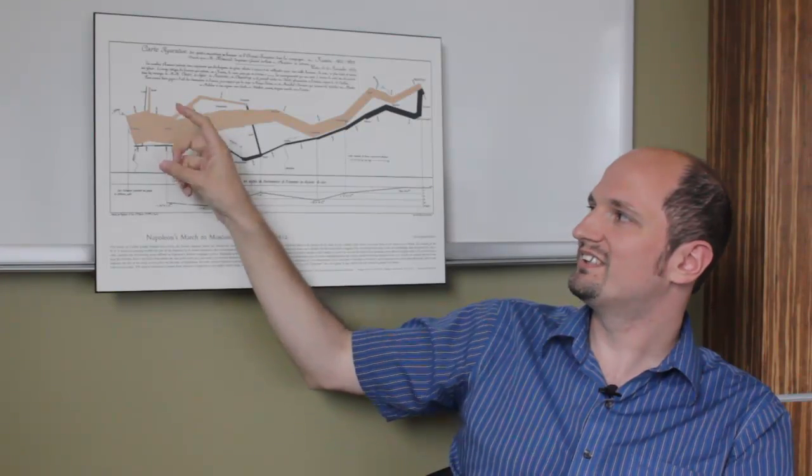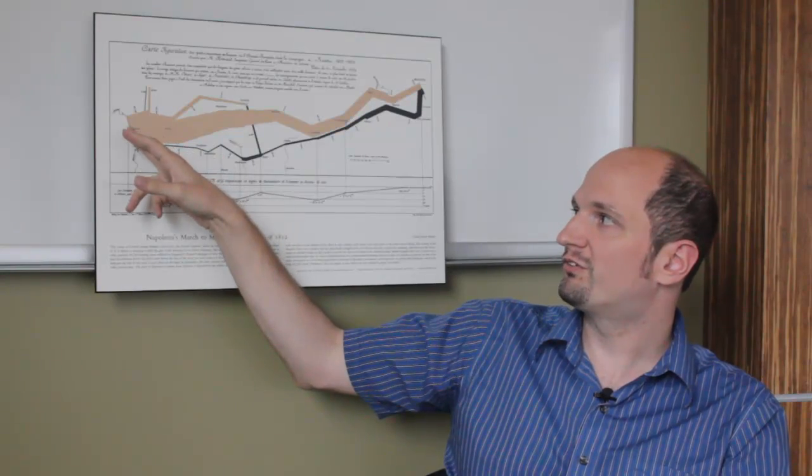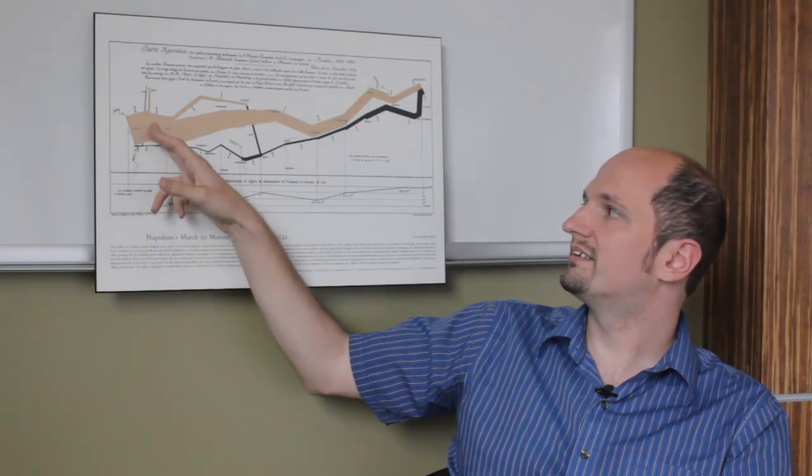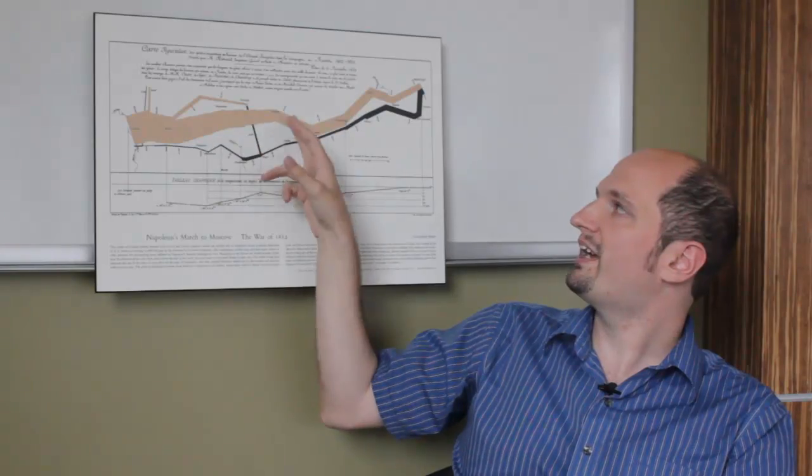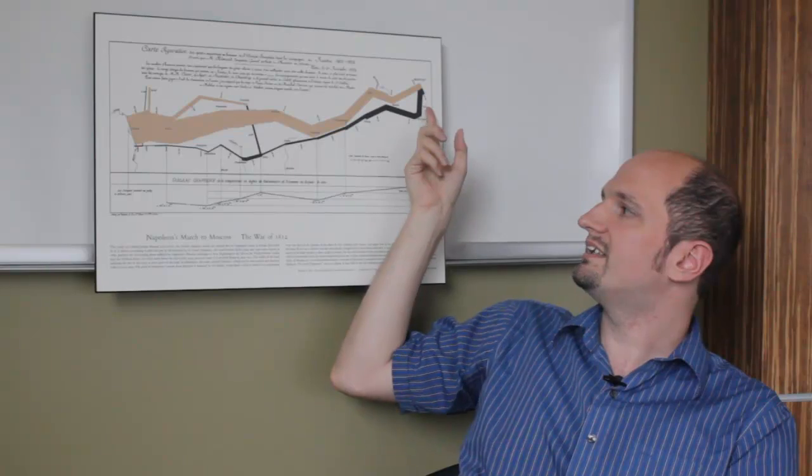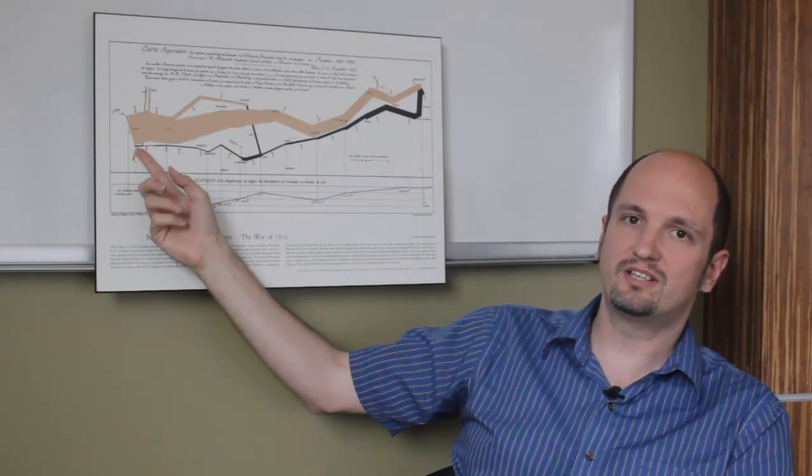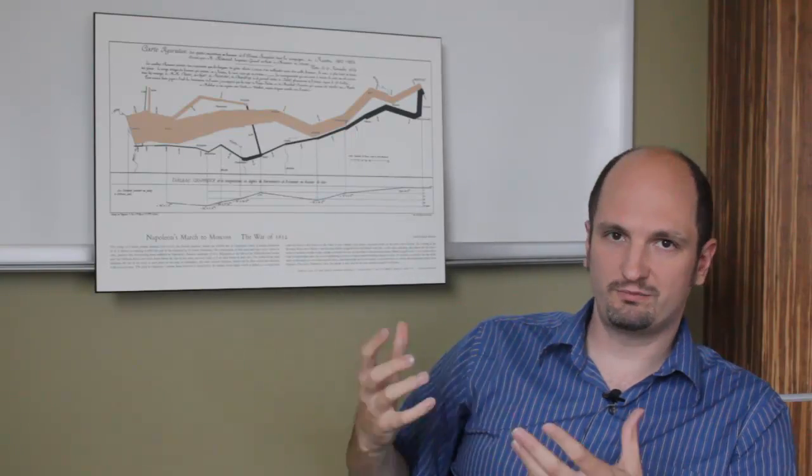And the size of it, the width, shows you how many people there were, how many soldiers he had in his army. He starts out with 422,000, and during this path going to Moscow, he loses about three-quarters of them, down to 100,000 here. And then going back from 100,000 down to about 10,000 at the end, is what was the people that he lost.